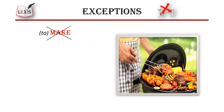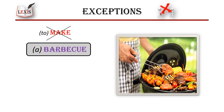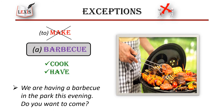So what nouns aren't used with make? Well, lots. But some of the common mistakes are: make a barbecue — don't use make with this noun. For example, 'We are making a barbecue in the park this evening, do you want to come?' sounds incorrect. The verbs to cook and have a barbecue are possible here.